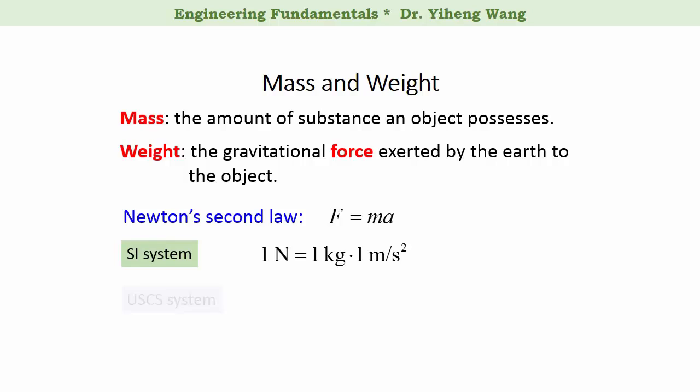Now for US customary unit system, we want to write an equation in the same format. Here, pound is the unit for force in US customary unit system, and foot per second squared is the unit for acceleration. So we want this blank area to be the unit for mass in US customary unit system, and that unit is a slug. Therefore, defined according to Newton's second law, one slug equals one pound force divided by one foot per second squared.